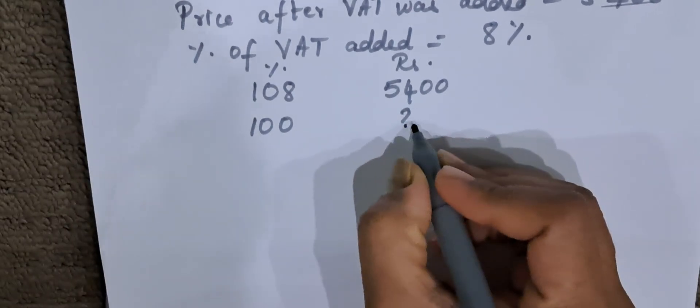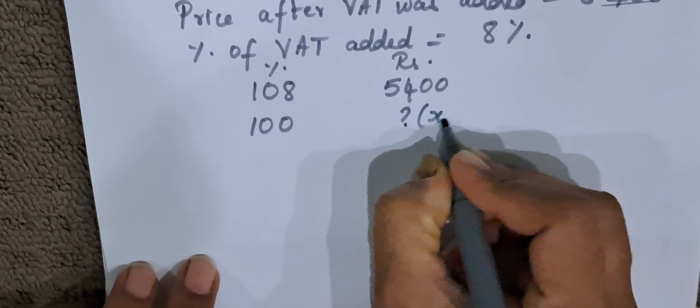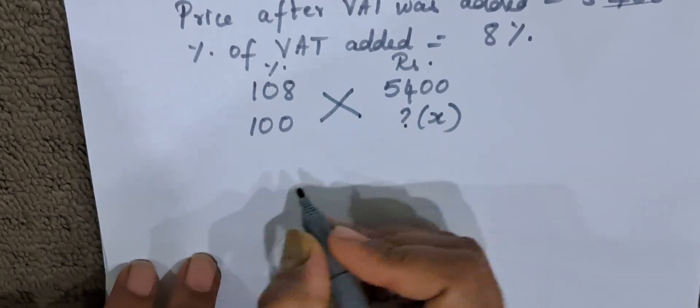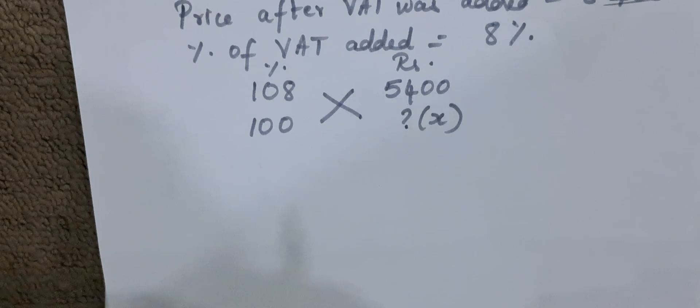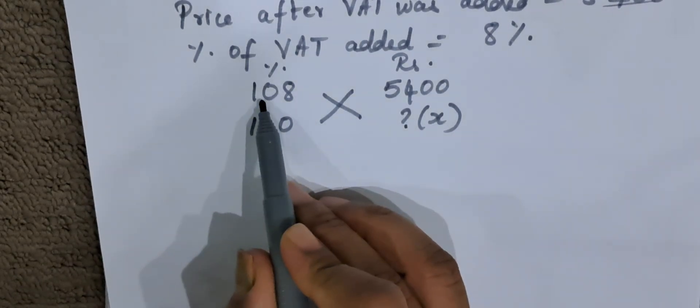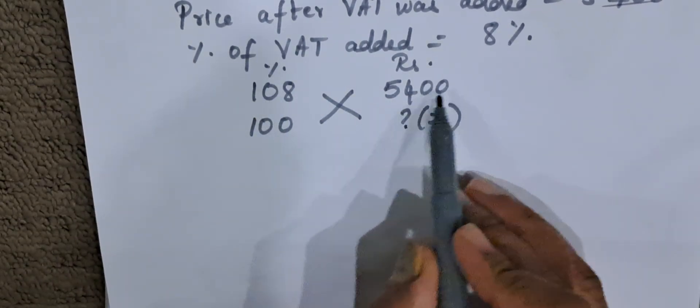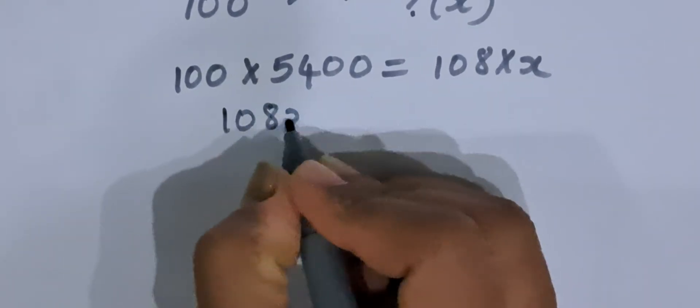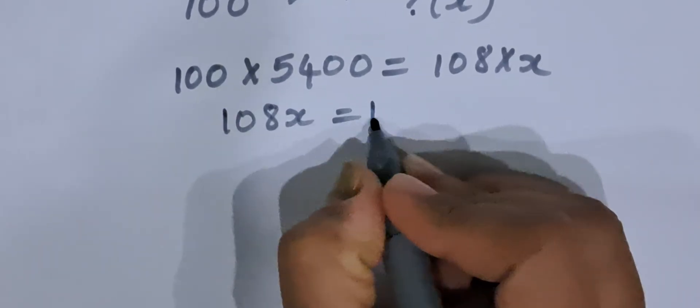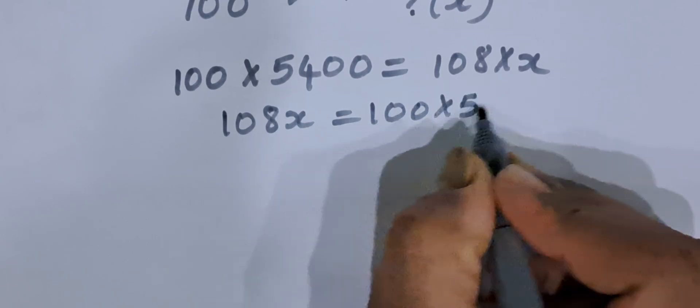What is the cost price before the tax? Let us take this as x and then cross multiply. This is very simple method of cross multiplication where we do not get confused. See here, 108% means 5,400 rupees, 100% means how much? 108x is equal to 100 into 5,400.